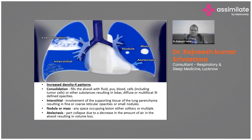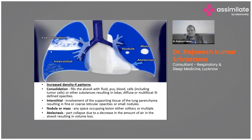On X-ray, increased density patterns include consolidation, interstitial shadows, nodules, or masses. We are particularly interested in interstitial shadows, which represent involvement of the supporting tissue of lung parenchyma, resulting in fine or coarse reticular opacities or small nodules. These types of shadows on X-ray point toward ILD. Consolidation is usually seen in pneumonia, and masses are typically associated with malignancy.